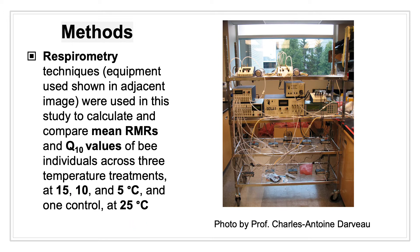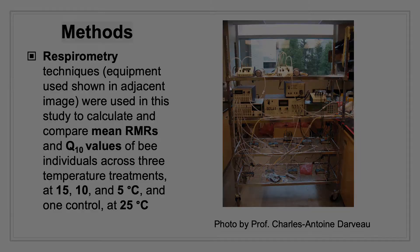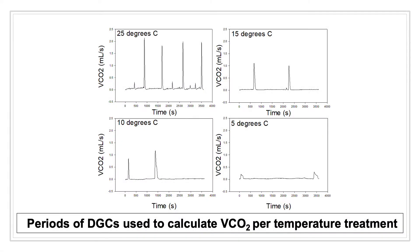CO2 production rate, or VCO2, was used as a unit of measurement and calculated using two different methods. VCO2 values were extracted from Bombus impatiens individuals exhibiting patterns of DGC.